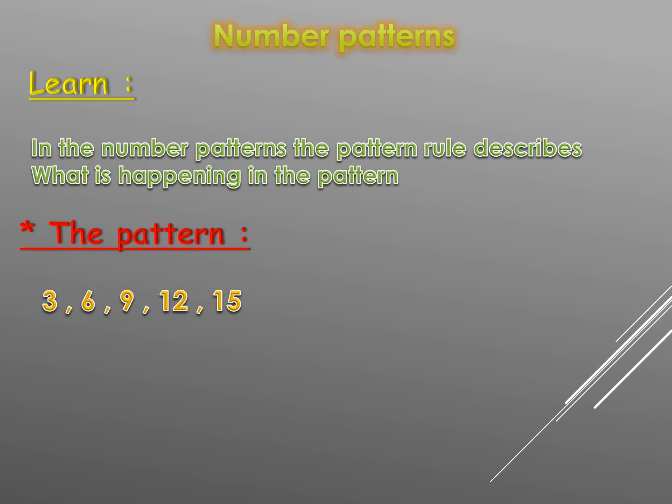Three, six, nine, twelve, fifteen — that means ascending, that means plus. The difference between three and six: six minus three equals three. That means plus three. Three plus three equals six, six plus three equals nine, nine plus three equals twelve, twelve plus three equals fifteen. That means the pattern rule is plus three.